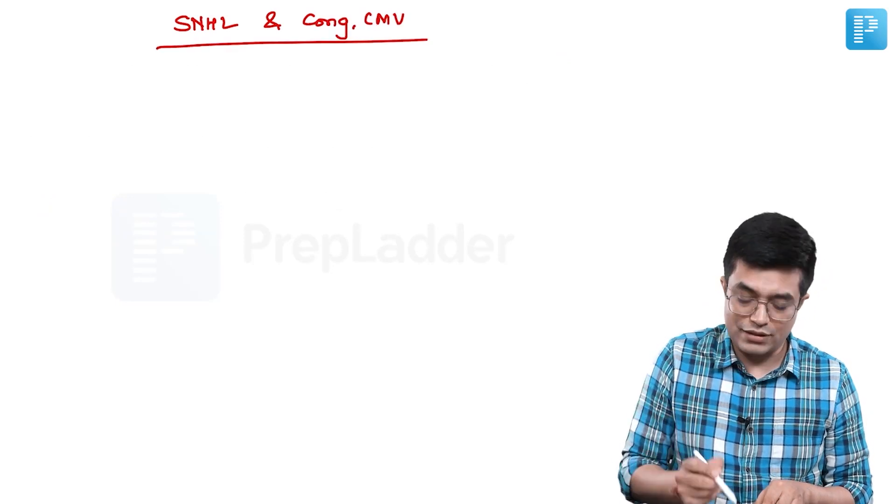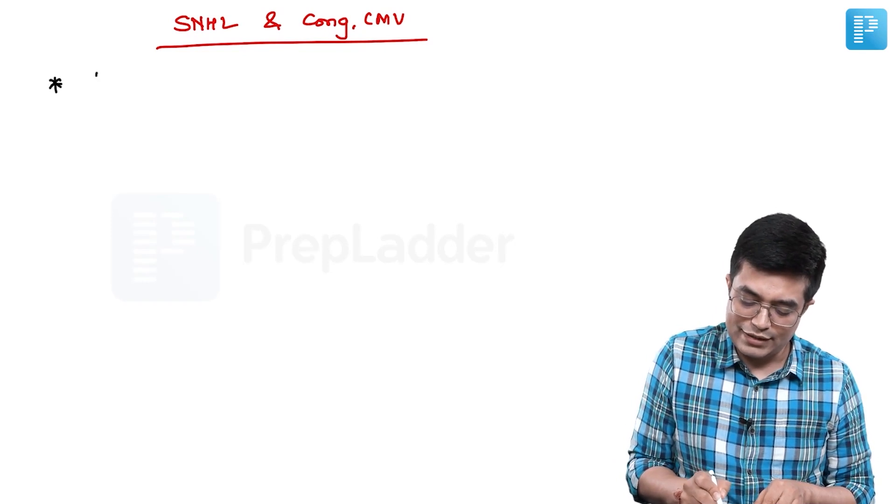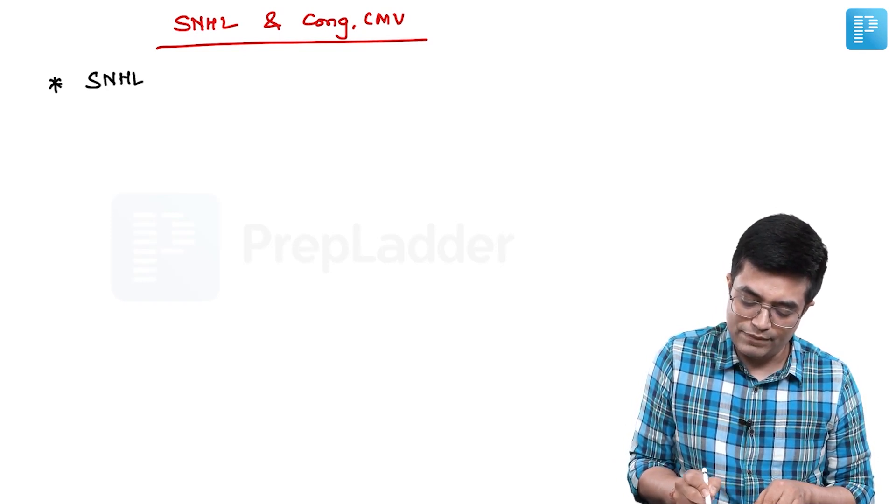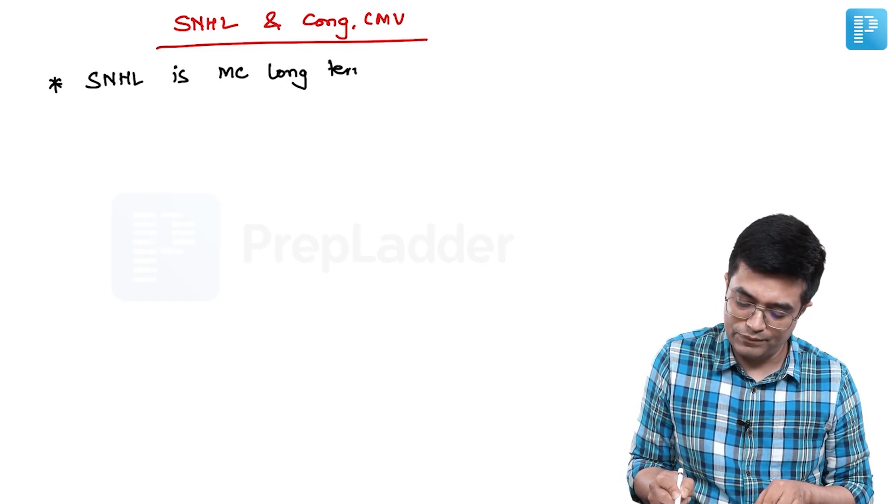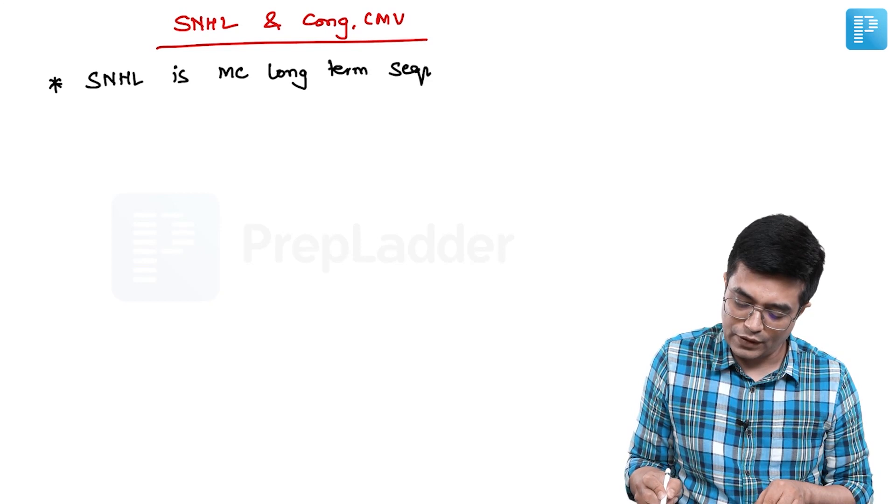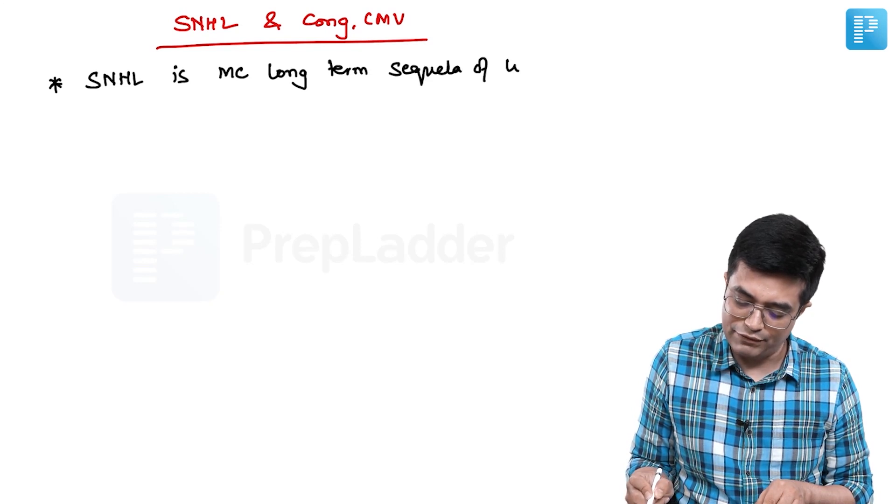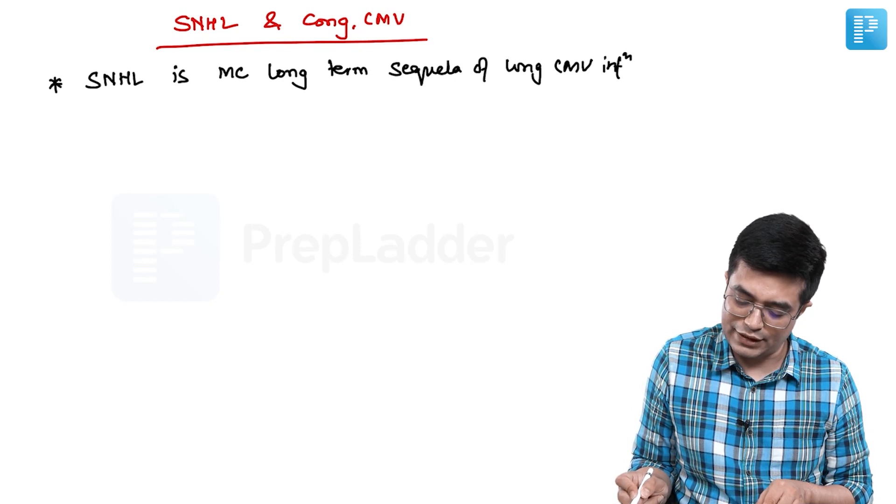The first key point is the first statement which has been given - that sensory neural hearing loss is the most common long-term sequela of congenital CMV infection. This is the first thing that you should remember.